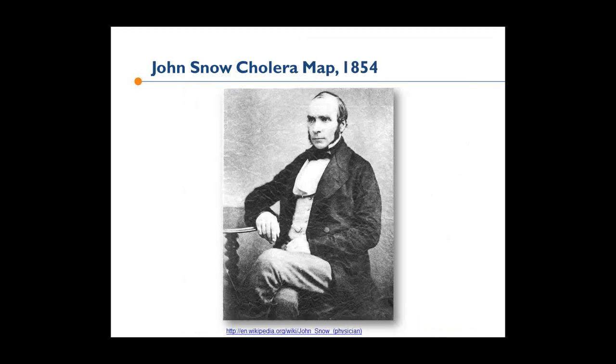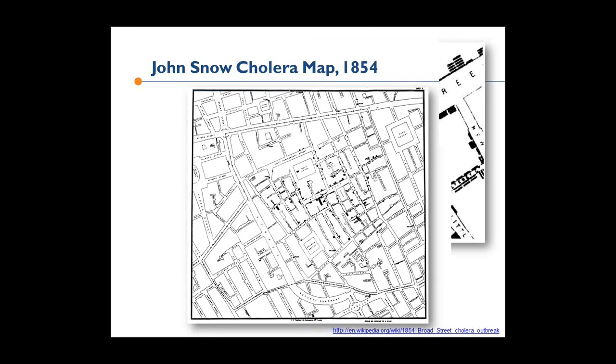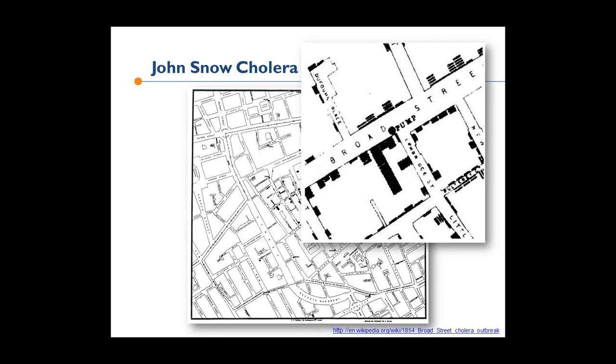This map shows where all the people who died lived. Each individual black bar represents one death. John Snow stacked these so you could see households where many, many people died. It's a very clear and early example of geospatial analysis showing where things happened in a way that makes you see visually that all of this was centered around the Broad Street water pump.